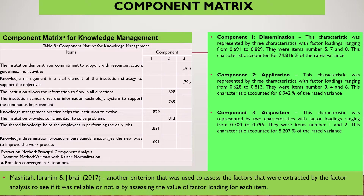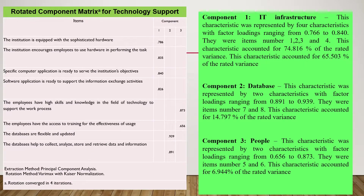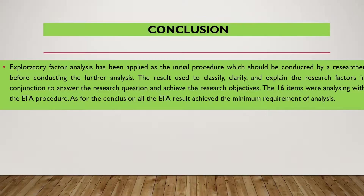For the component matrix, knowledge management was divided into three components: component one is categorized as dissemination, component two is application, and component three is acquisition, based on the factor loading generated. The rotated component matrix for technological support was also categorized into three components: component one is infrastructure, component two is database, and so on.